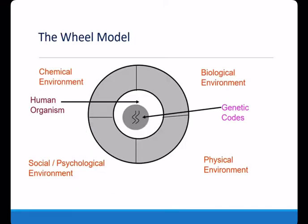The second model is the wheel model, which emphasizes the close relationship between the host and the environment. The host occupies the position of the wheel axis, in which genetic material plays an important role. The peripheral wheel represents the environment, including the biological, physical, chemical, and social environment. The organism lives in the environment, while the disease exists in the organism and the environment. The parts of the wheel model are flexible and may vary in size with different diseases.